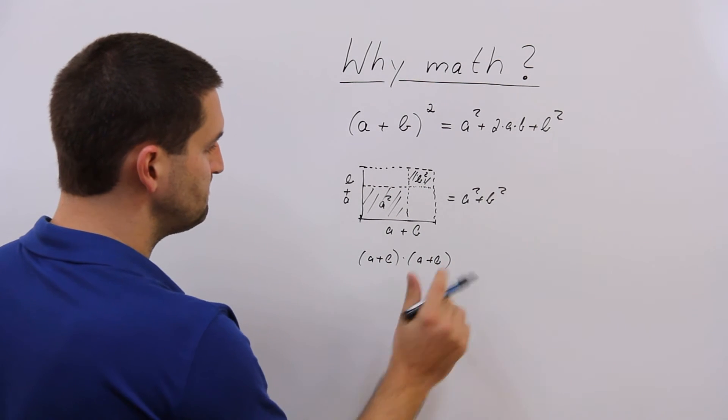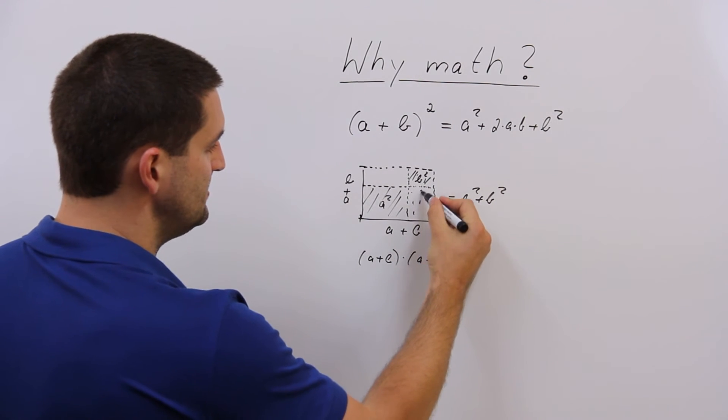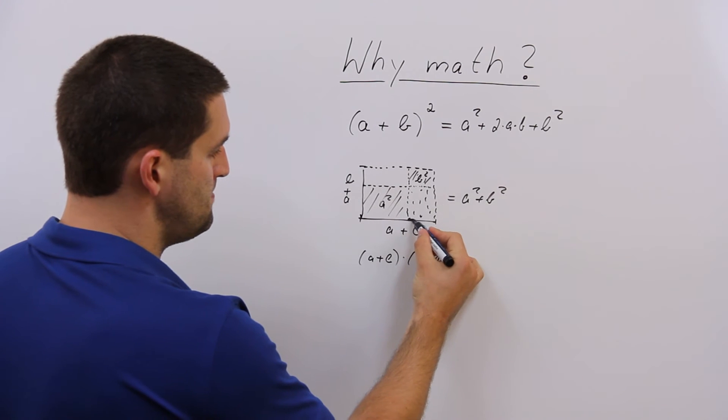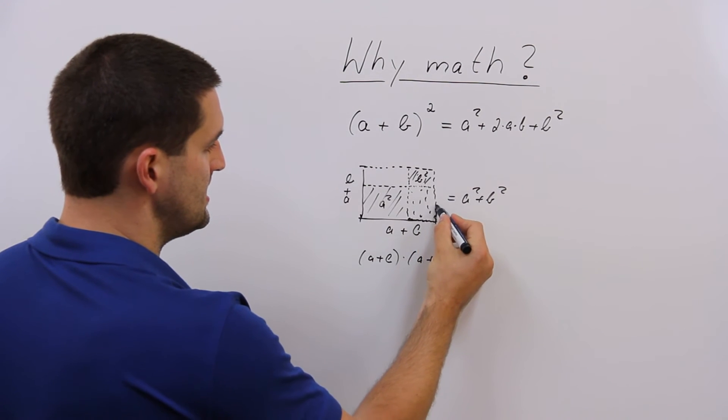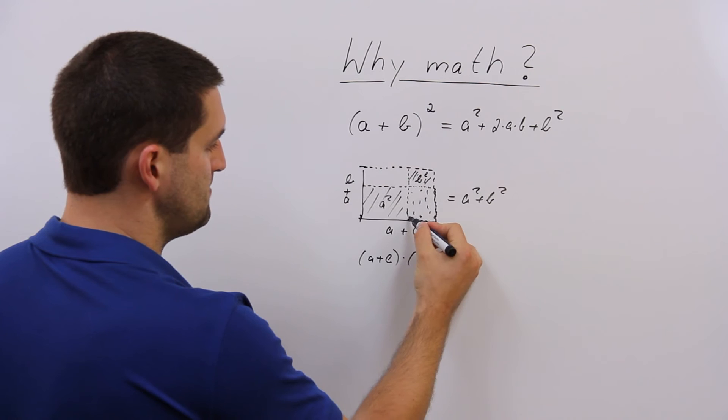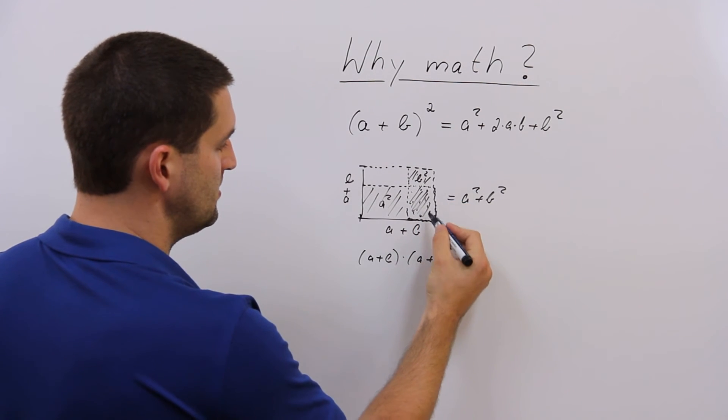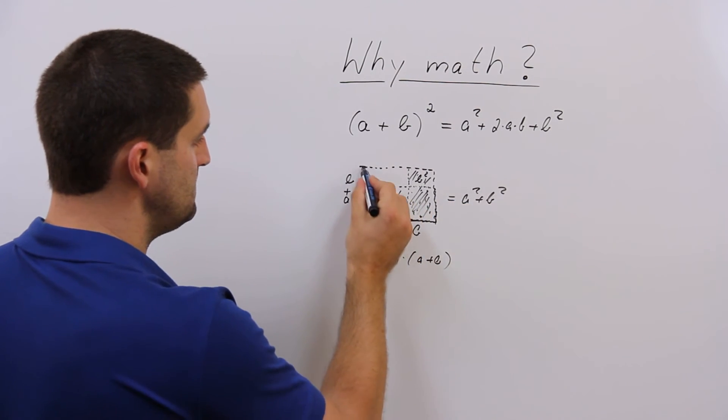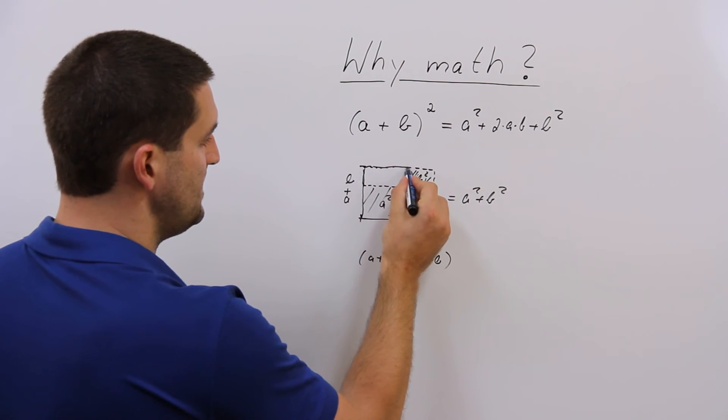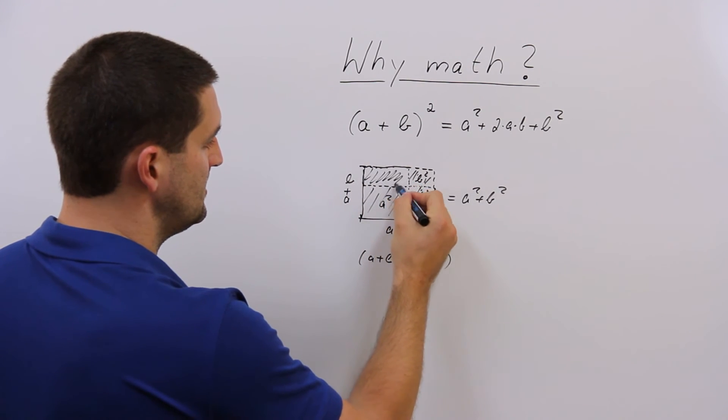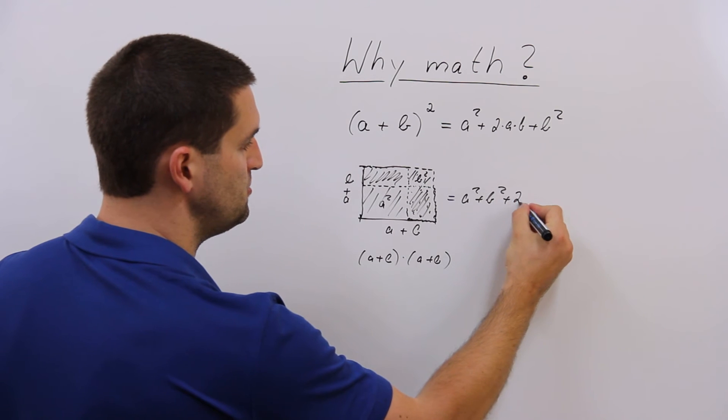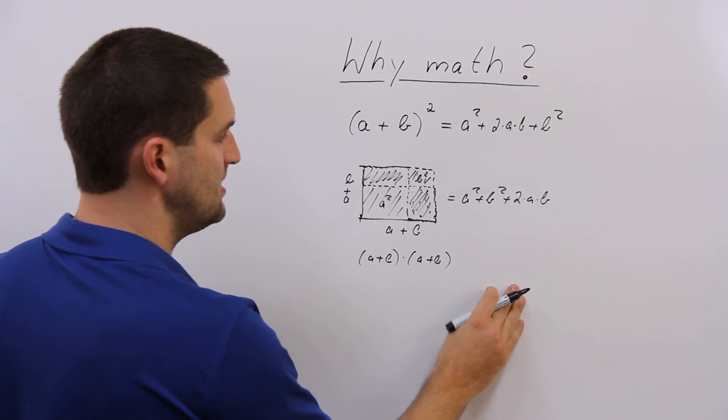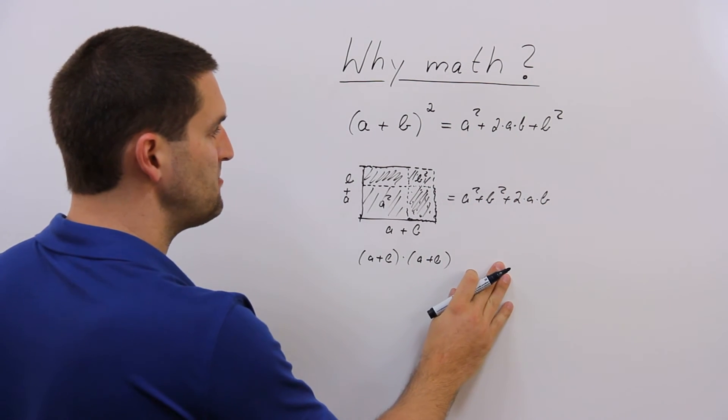And what is missing? A rectangle here with b and an a. It's b × a for one time, and again b × a, a rectangle again. Two times, plus 2ab. You don't have to learn the formula because